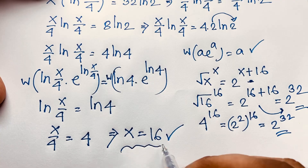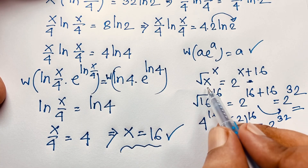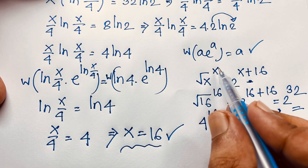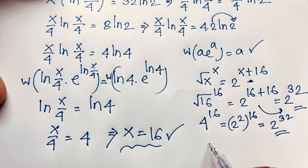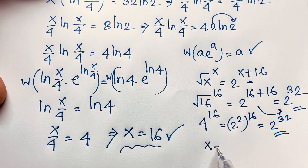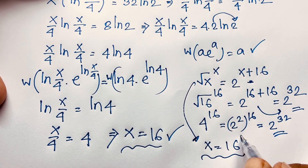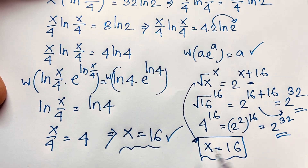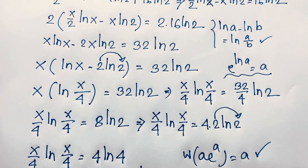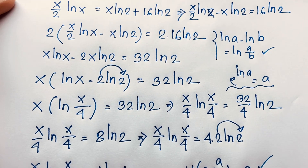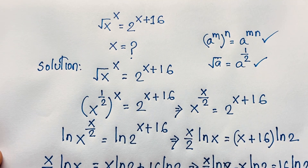This is our final answer in this exponential math question: square root x, power x, is equal to 2 to the power x plus 16, and x is equal to 16. This is our final value in this exponential math question. Thank you all. If you enjoyed this math Olympiad question, please watch the channel for other interesting videos. Goodbye. Take care.